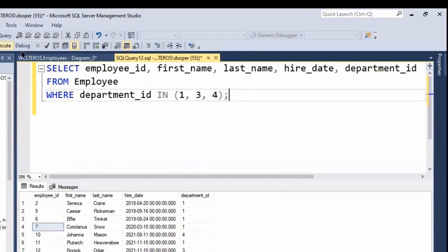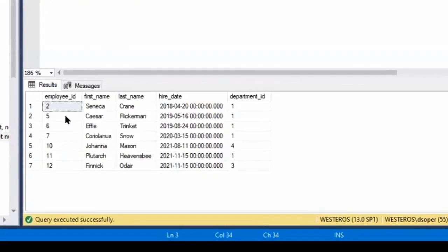So if we run this, we should get exactly the same results. And you can see we do: 2, 5, 6, 7, 10, 11, and 12. So everyone is either in departments 1, 3, or 4.